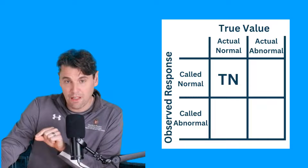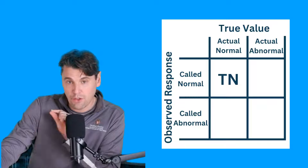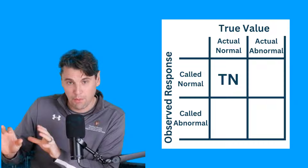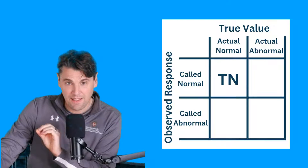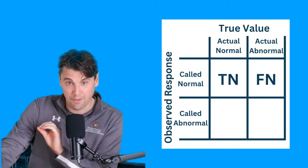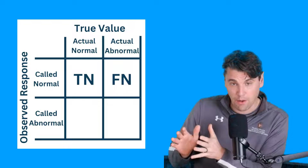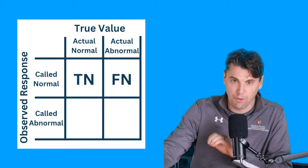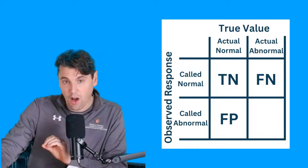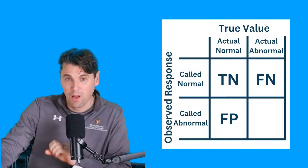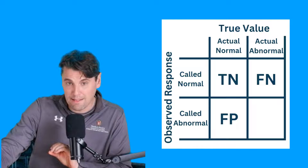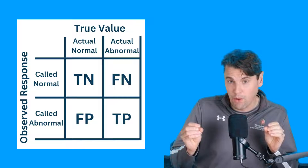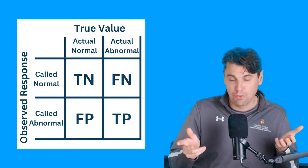We'll fill out the different options within this little square. If it's actually normal and we call it normal, that's a true negative — we got it right. If it's actually abnormal, so there is cancer, but it's missed, that's what we call a false negative — we called it normal. If we call it abnormal but it was actually normal, that's a false positive. And then if there is actually cancer and we call it abnormal, that's a true positive.